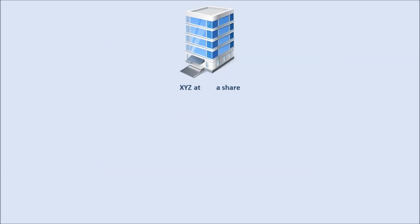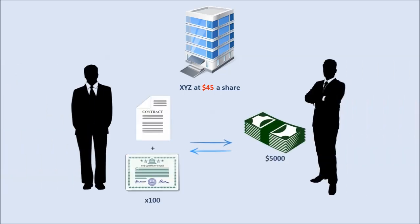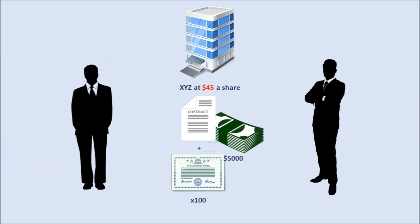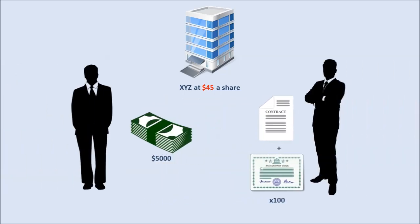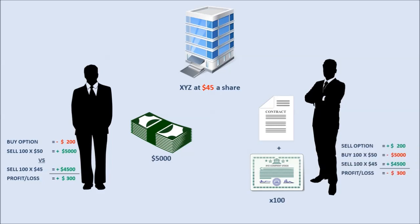If shares of company XYZ are trading at $45 within a month, Mike would exercise his option to sell Bill his 100 shares at $50 a share for a total of $5,000. Mike would have then cut his losses down to $300 instead of $500, because he had to pay $200 for the contract. Bill would then lose $5,000 for purchasing the shares minus $4,500 for what he could sell the shares for, but he did collect $200 from the contract, netting him a loss of $300.